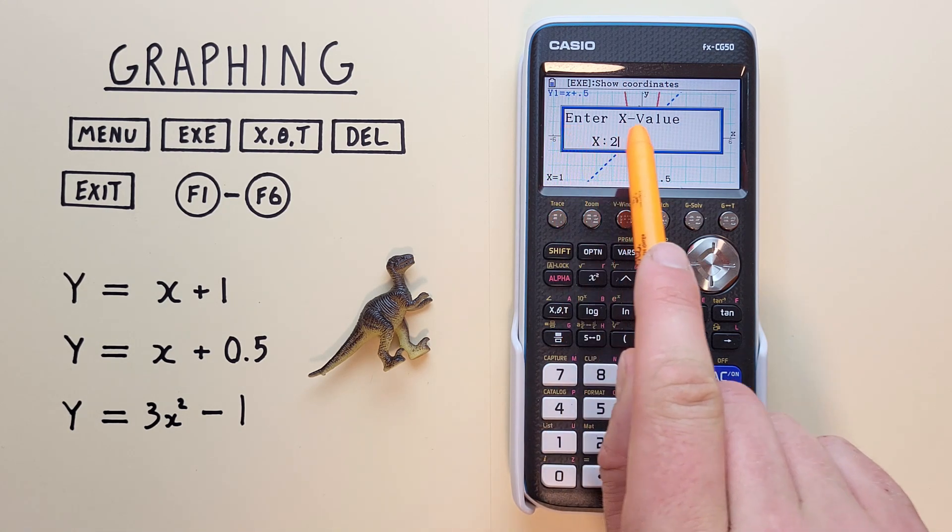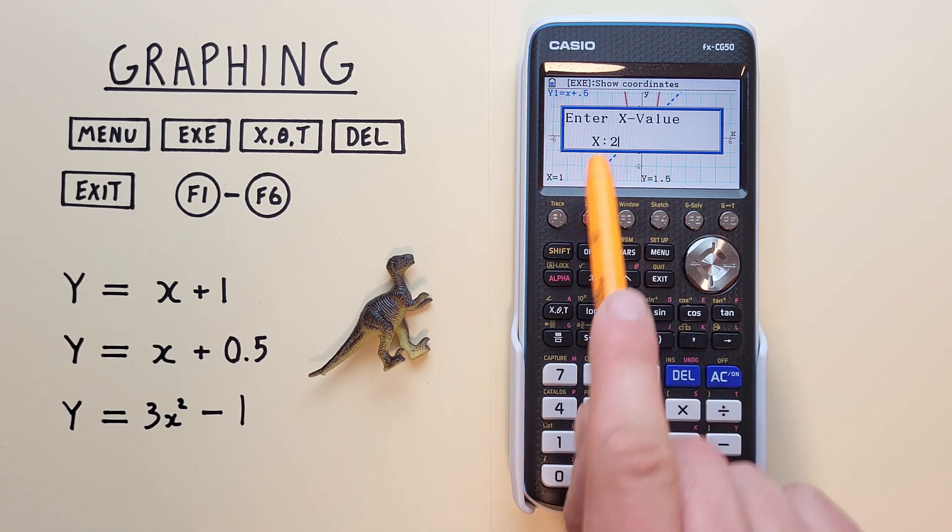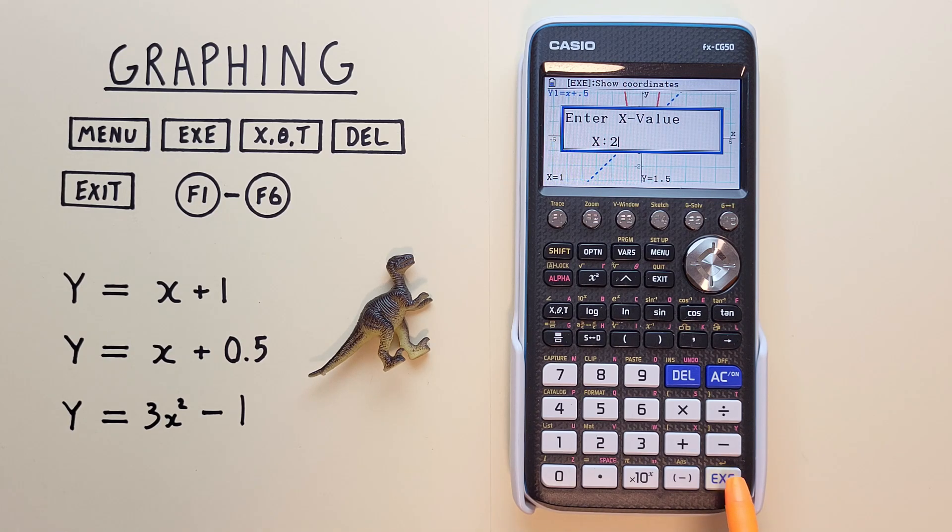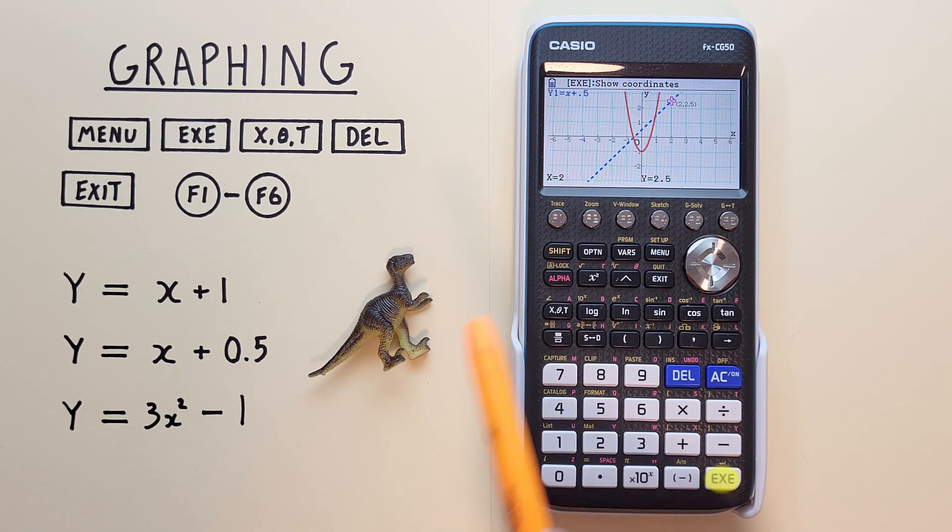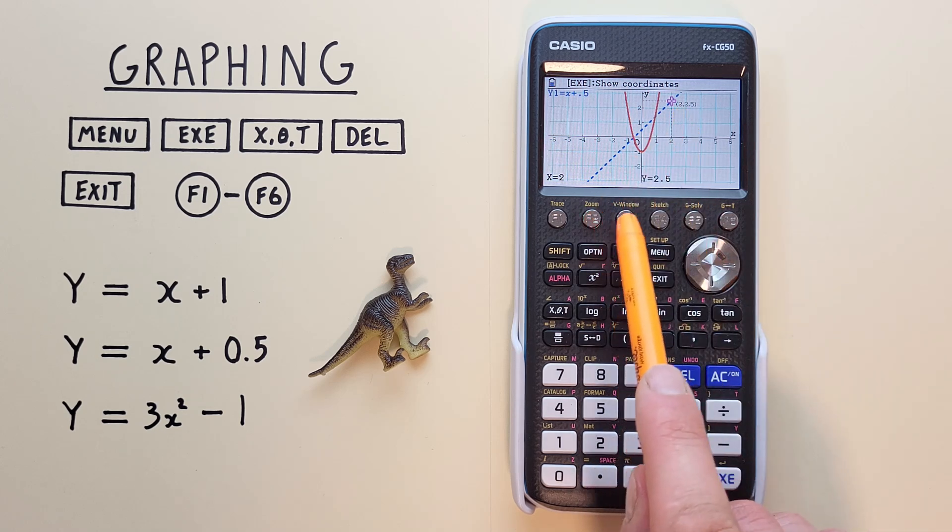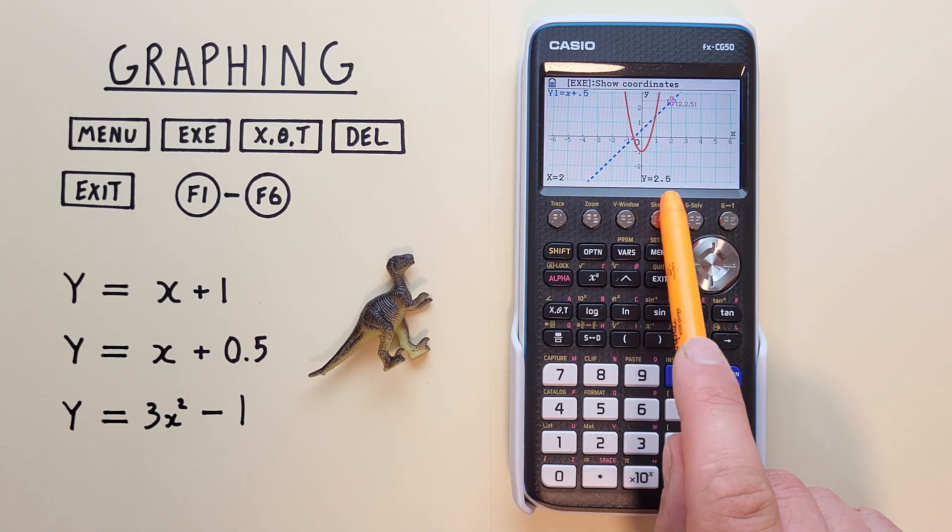and then it says enter X value. We've already entered our 2. Hit EXE, and we see our cursor has jumped to X equals 2, and that tells us Y equals 2.5.